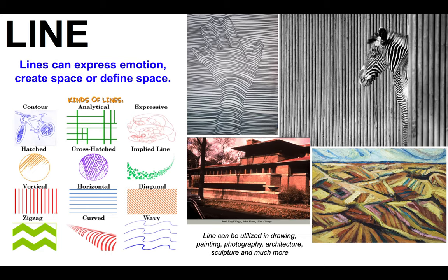If you look at the image with the hand and the lines going up over it, simple lines were used and the direction was changed, and thus a hand was formed and defined by those lines. You can see line present in the photograph with the zebra, and in the painting on the lower right, where different widths and directions of lines with different colors show a landscape and help create and define space. We also see line in architecture, buildings, and sculptures.